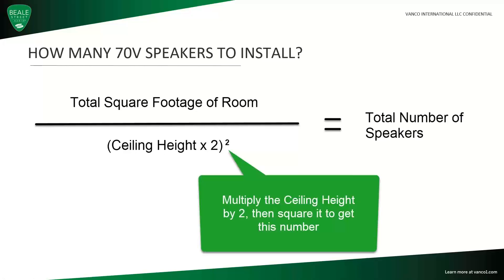The next formula is: how do I decide how many speakers I need in a room? Start with the square footage of the room — length times width. Then take the ceiling height, multiply it by two, and square that number. Then divide the square footage by that ceiling height number and round up. That's the total number of speakers you're going to use in that space. This formula will tell you how many speakers you need and help you with your quoting.